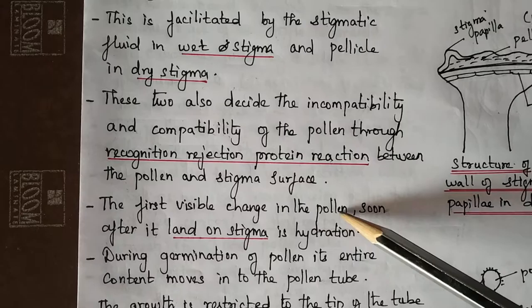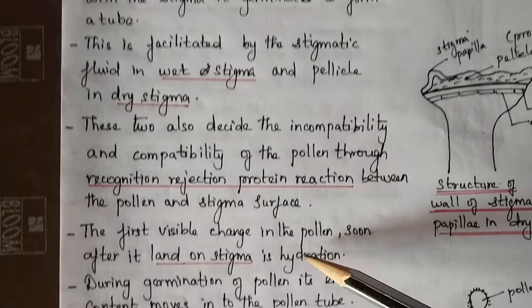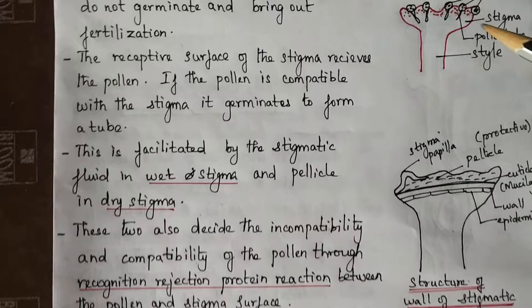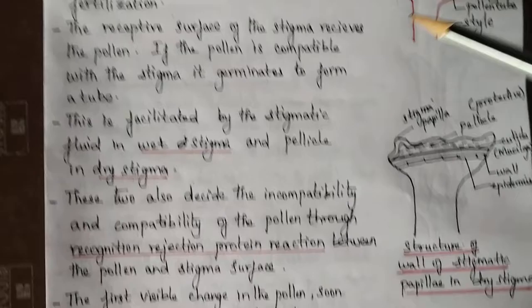The first visible change in the pollen, soon after it lands on the stigma, is hydration. During germination of pollen, its entire content moves into the pollen tube — including male gametes, tube nucleus, and cytoplasmic contents. Everything moves into the pollen tube.